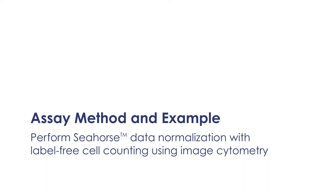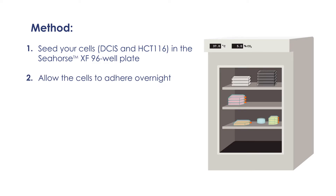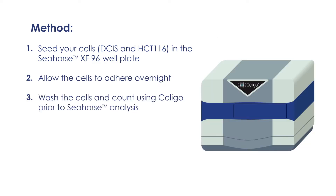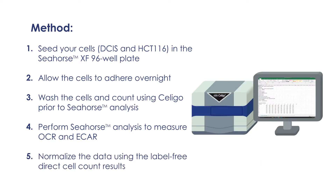To perform Seahorse data normalization with label-free cell counting: first, seed your cells in the wells and allow the cells to adhere overnight. Next, wash the cells and count using Soligo prior to Seahorse analysis. Subsequently, perform Seahorse analysis to measure OCR and ECAR. And finally, normalize the Seahorse readout using the direct cell counting results.